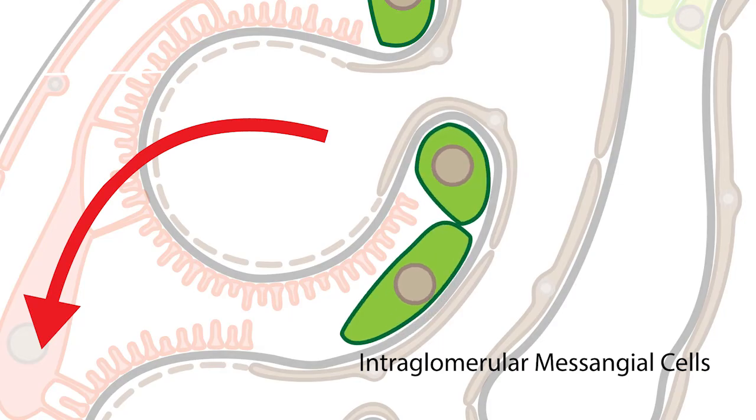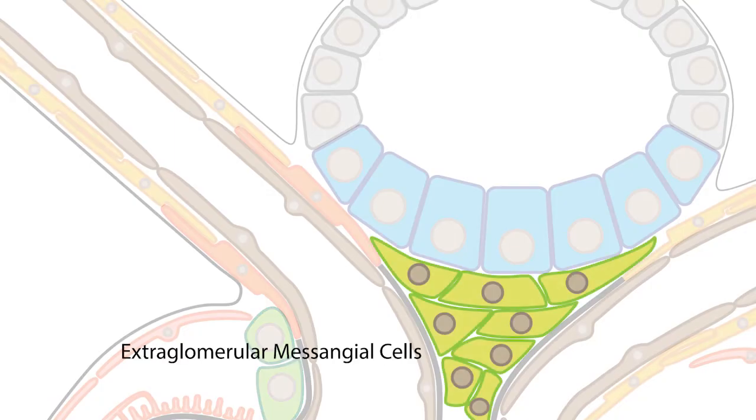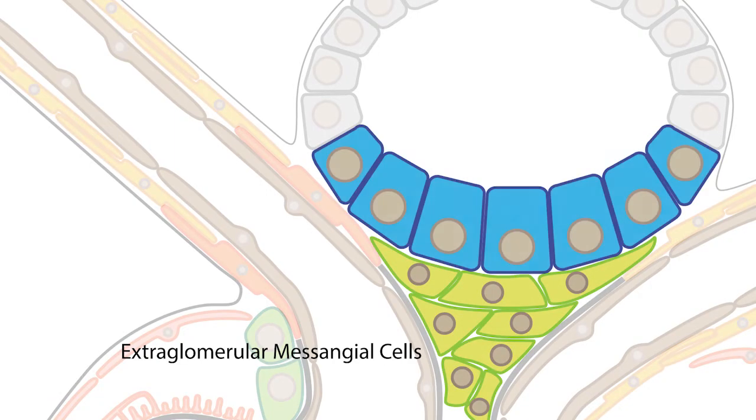The extraglomerular mesangial cells, as their name implies, are located outside the Bowman space and are situated between the macula densa cells and granular cells.